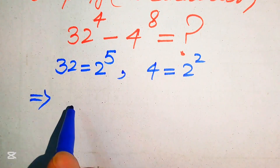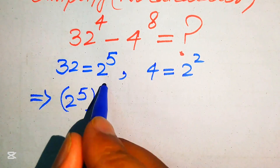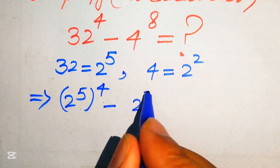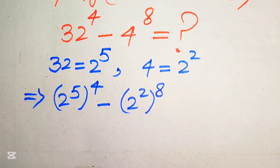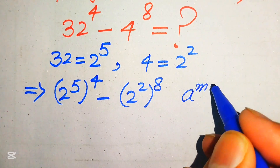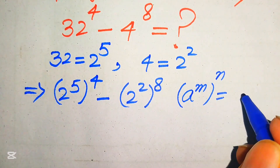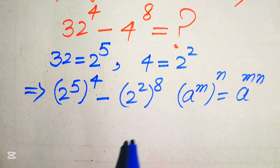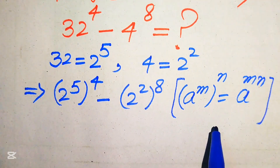The expression is rewritten as 2 to the power of 5, with whole power 4, minus 2 to the power of 2 with whole power 8. After that we apply the exponent law: a to the power of m, to the power of n, equals a to the power of m multiplied by n.